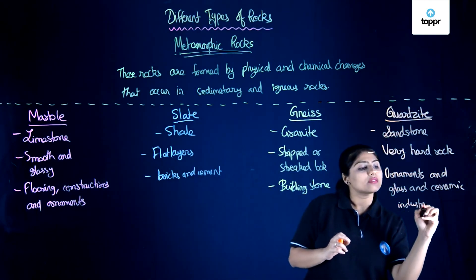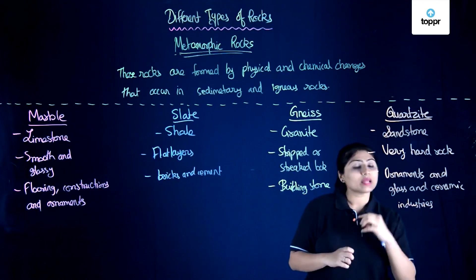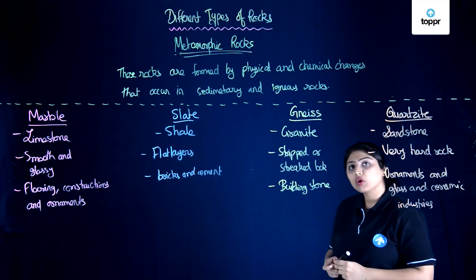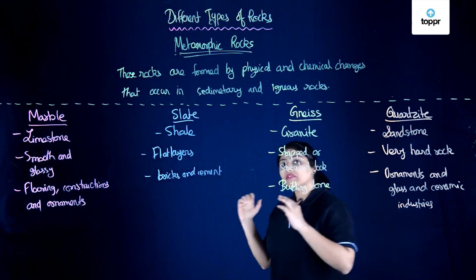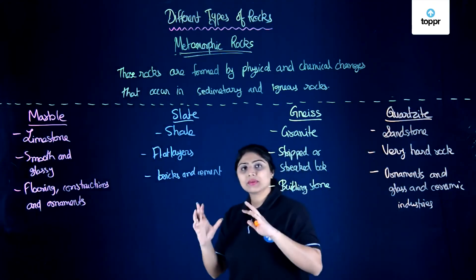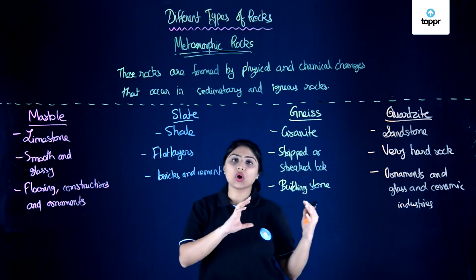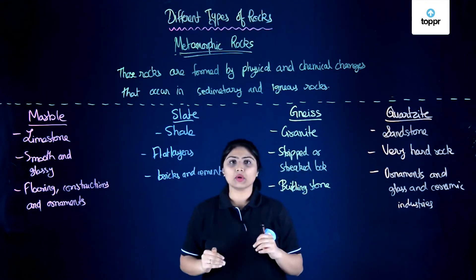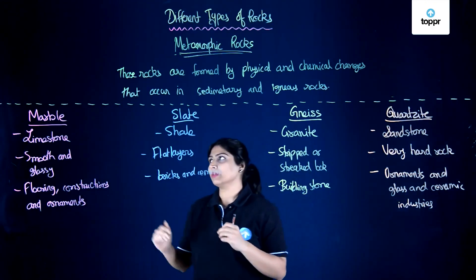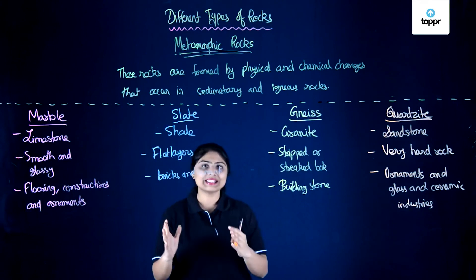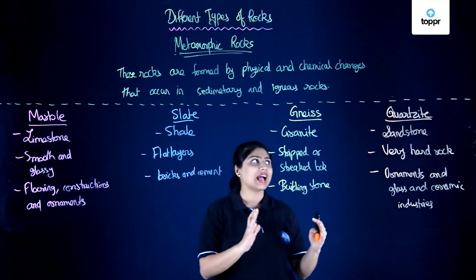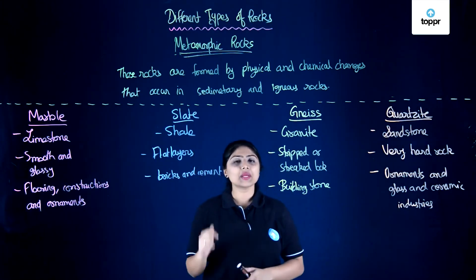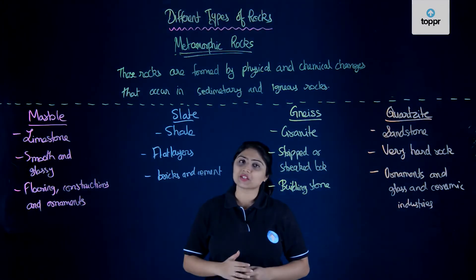The third type of rock — metamorphic rock — forms when different types of sedimentary and igneous rocks are transformed. We've learned about four types: marble, slate, gneiss, and quartzite. Here we come to the end of our session.